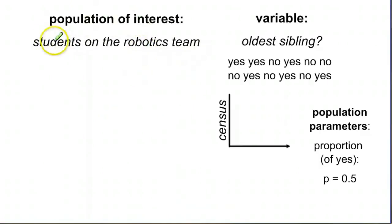We still have our same population, students on the robotics team. We're asking them a slightly different question, are you the oldest sibling? And the twelve people responded either yes or no. So they said one of those two answers.